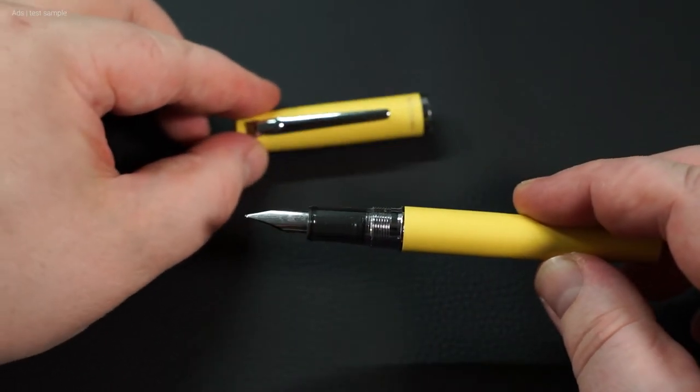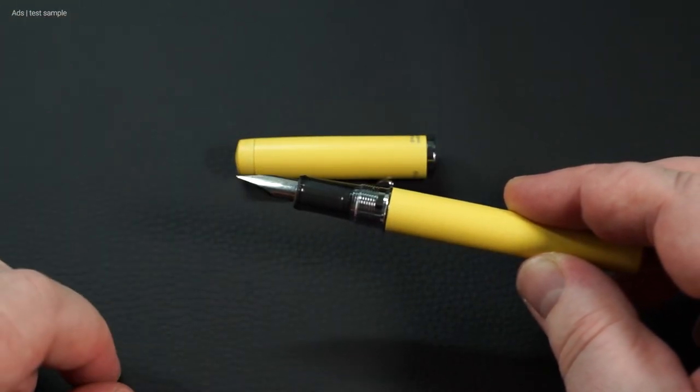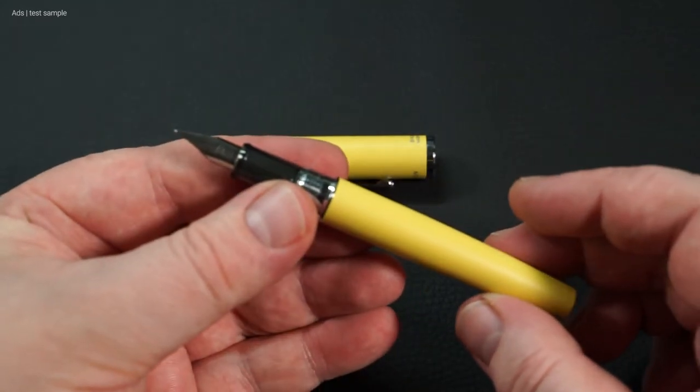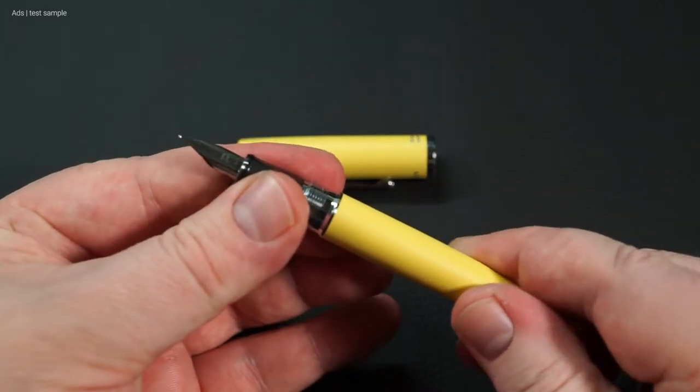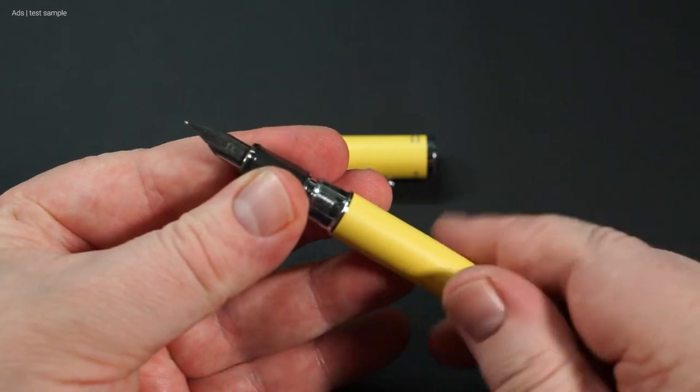The cap is screwed on. Under the cap, you will find the plain nib and a plastic grip section. The thread, which is quite long, is made of metal.